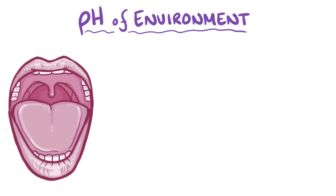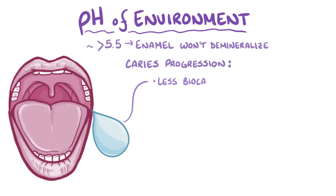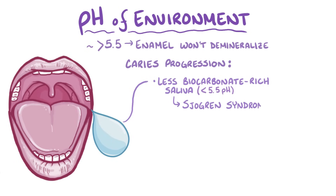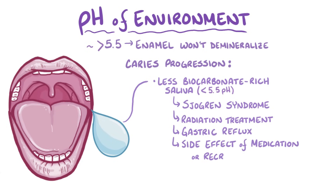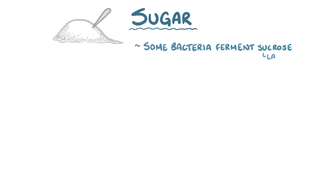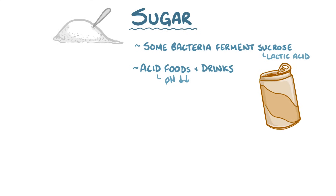Typically, dental plaque can form on the surface of teeth, but if the pH of the local environment around the tooth's surface remains above about 5.5, enamel will not demineralize. One factor that tips the balance towards caries progression is having less bicarbonate-rich saliva, which can result from conditions like Sjögren's syndrome, radiation treatment for cancer, gastric reflux, or as a side effect of a medication or recreational drugs. A key factor that contributes to tooth demineralization is sugar. Some bacteria ferment sucrose, and that produces lactic acid as a byproduct. In addition, acidic foods and drinks can also cause the pH in the mouth to lower, so a drink that has lots of sugar and lots of acid, like soda which has a pH of around 3, can damage the teeth in two ways.